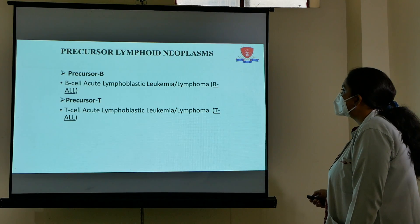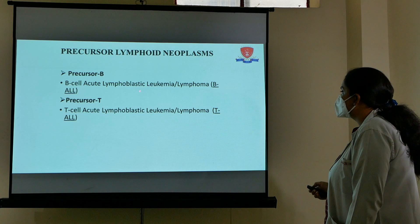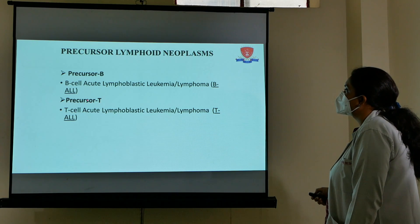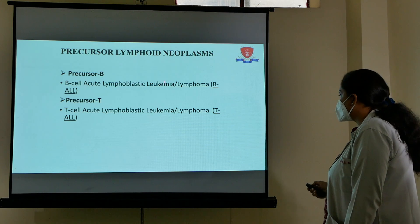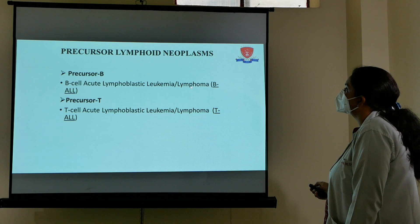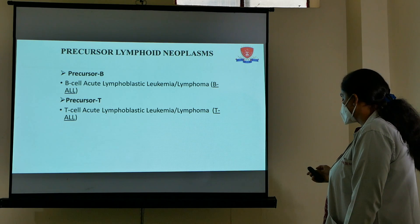Precursor B cell neoplasms are divided into two types: B cell ALL and T cell ALL. When they involve the blood, they are called leukemia; when they are only present in the lymph nodes or peripheral organs, they are called lymphomas.